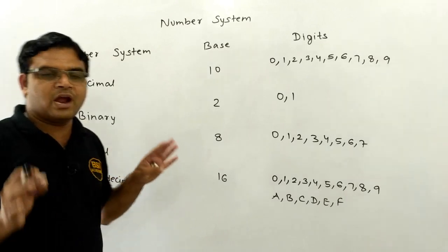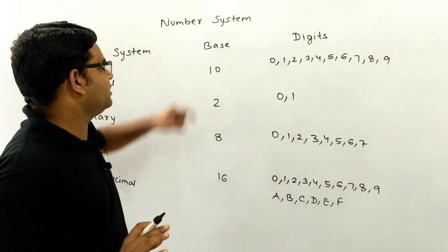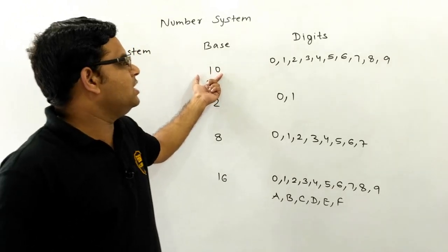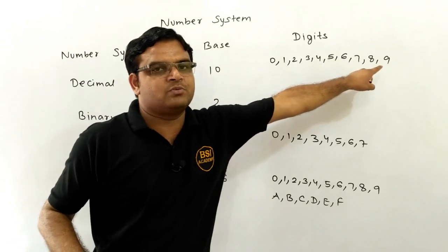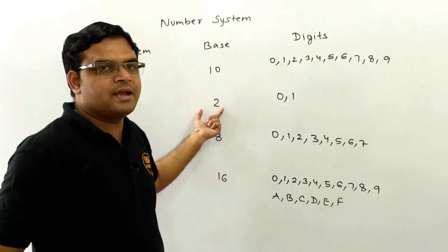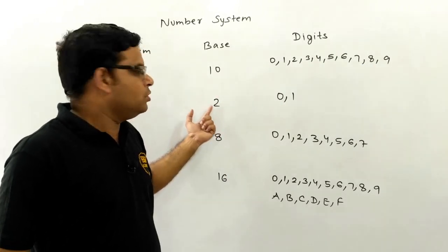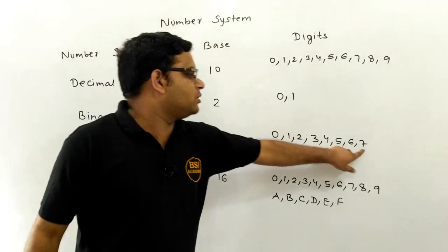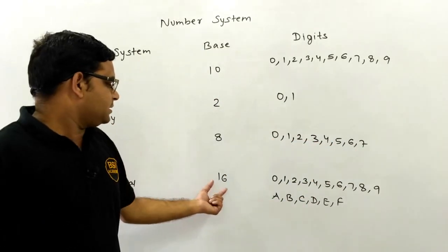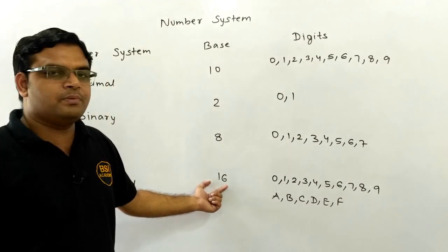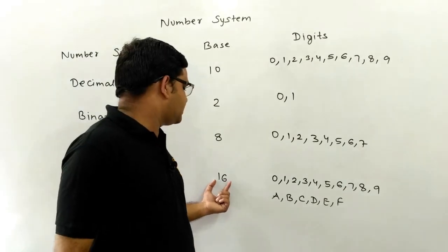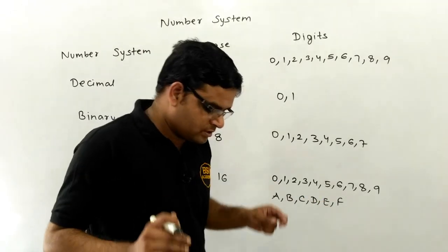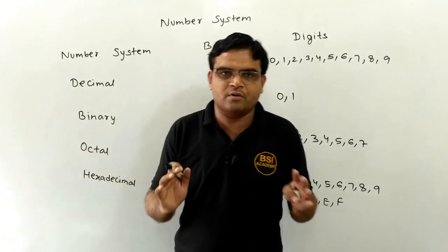These are the number systems which we have to study for our exam. Now students, note the highest digit concept. For decimal, the base is 10, so its highest digit is 9, meaning 10 minus 1 equals 9. Similarly, for binary, the base is 2, so its highest value is 2 minus 1, which is 1. For octal, 8 minus 1 gives 7, so its highest digit is 7. For hexadecimal, the base is 16, so its highest digit is 16 minus 1, which is F — meaning 15, represented by F.